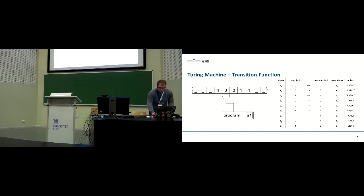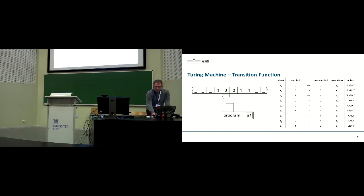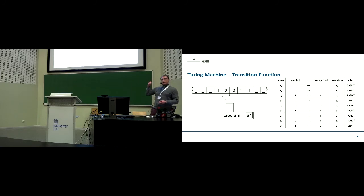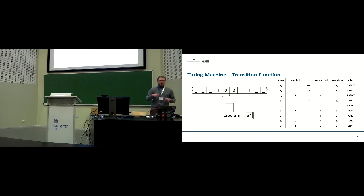Let me demonstrate how you read the transition function. Right now the read head reads zero and we are in state one. Looking at the transition table: in state one, reading symbol zero, we write zero, remain in state one, and go to the right. We repeat until we are in state two, read either a blank or a zero, and then halt the program. This program describes a binary number incrementer.